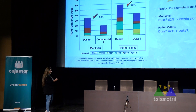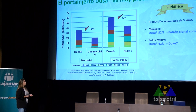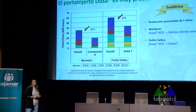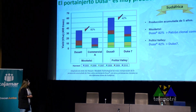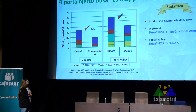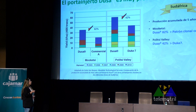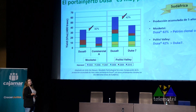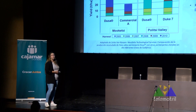Otro ejemplo, en este caso en Sudáfrica, donde no compararon el Dusa con aguacate de semilla sino con otros patrones clonales. En la región de Moketsi se comparó el Dusa con un patrón comercial clonal A, con una diferencia muy acusada del 82%. En otra región, la producción acumulada desde el 2005 hasta el 2010 comparando con Duque 7 obtuvo un 42% más de producción. Esto no quiere decir que el Duque 7 sea un mal patrón clonal: siempre hay que elegir el patrón clonal adaptado al terreno que tenemos.